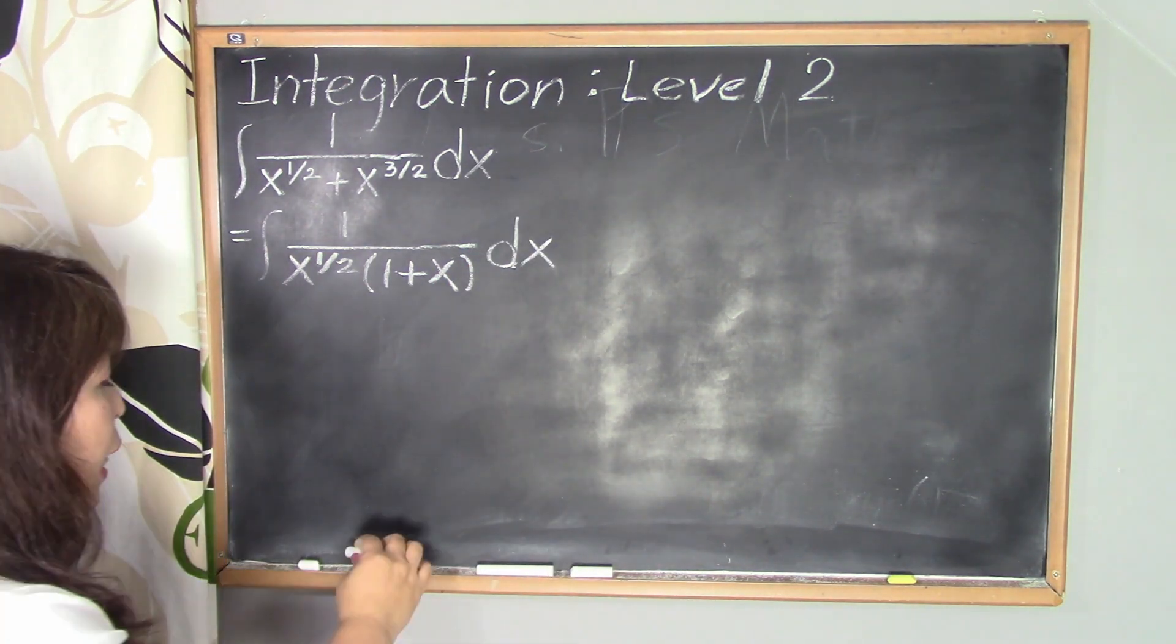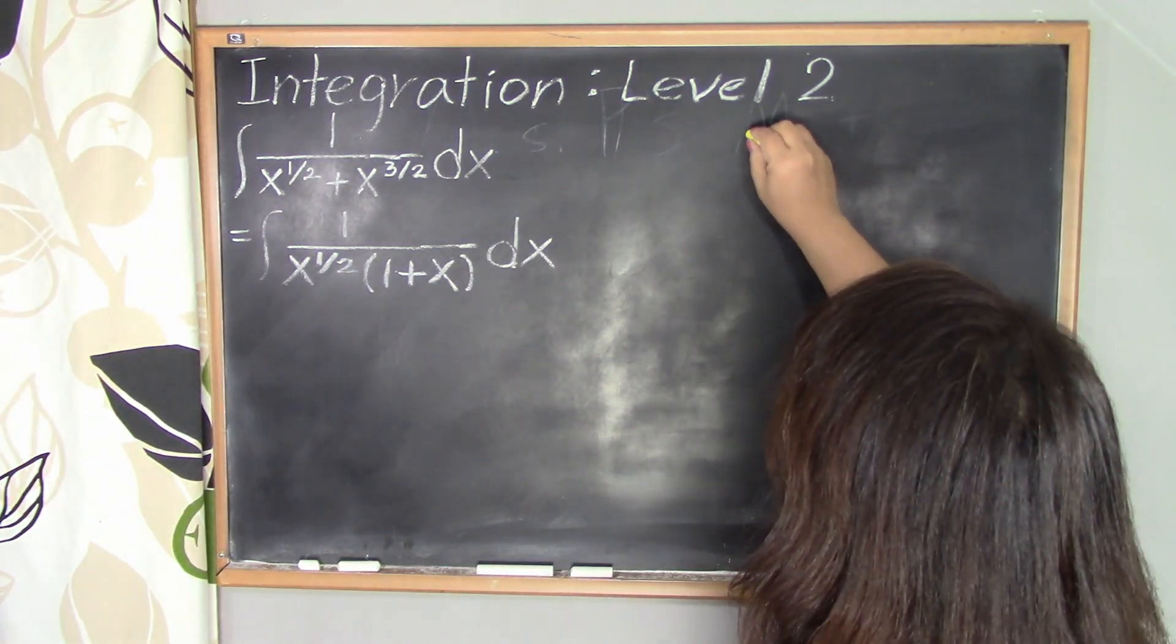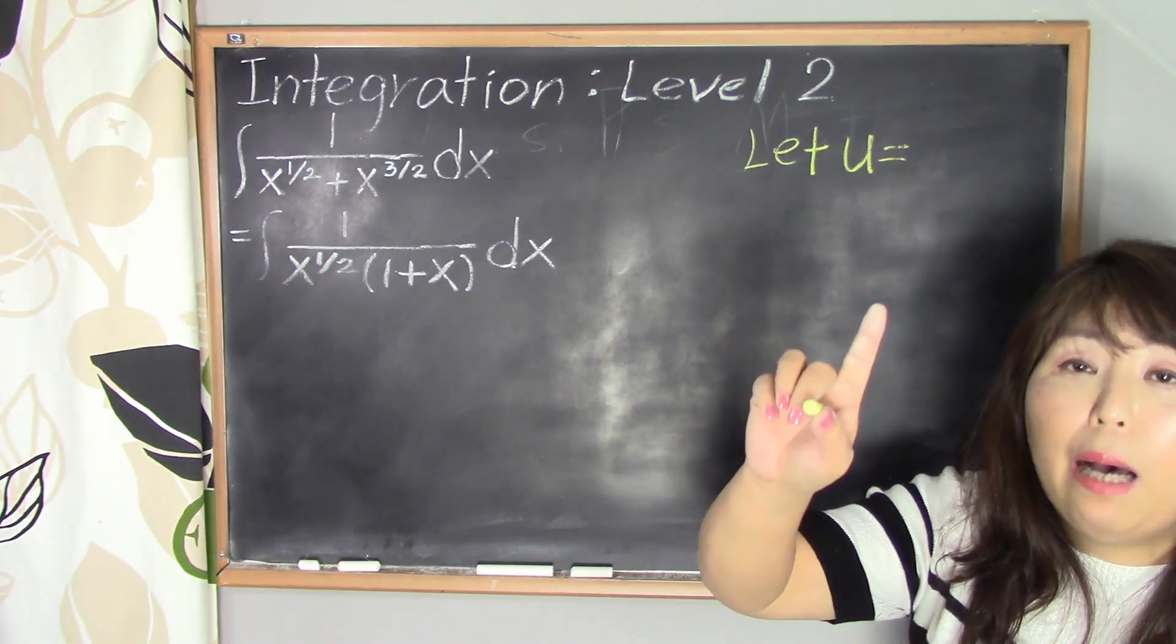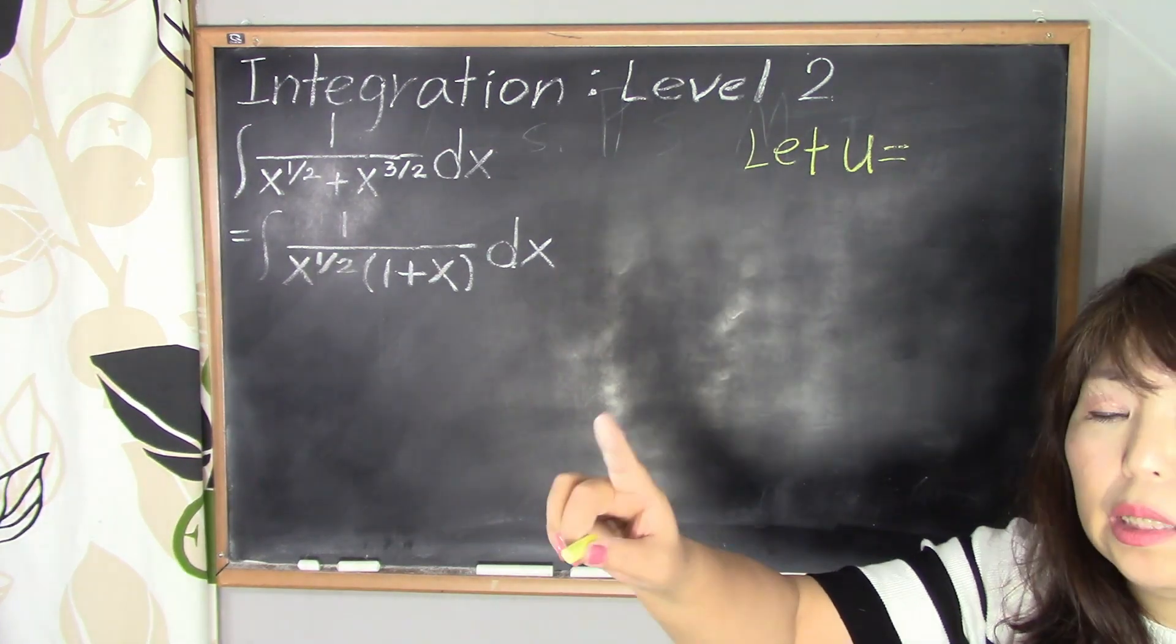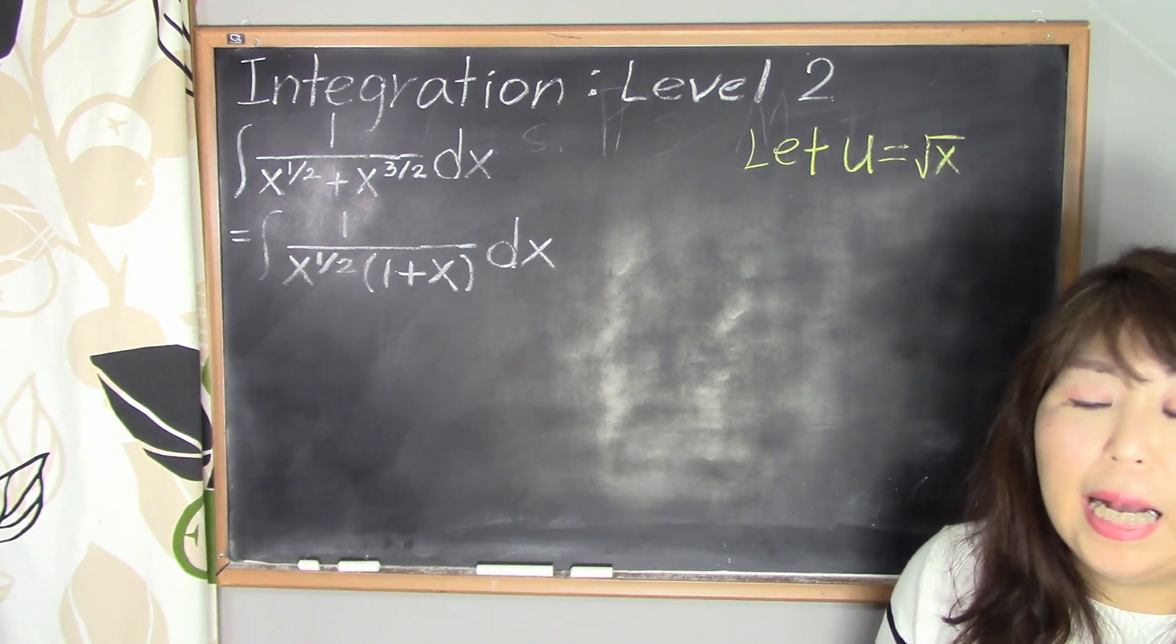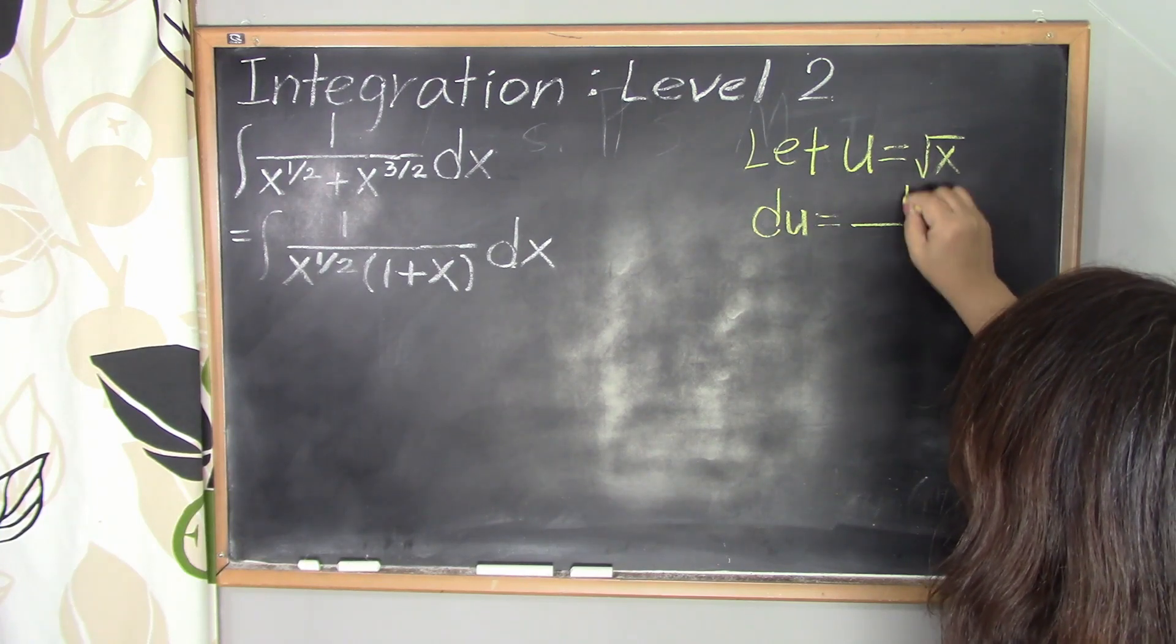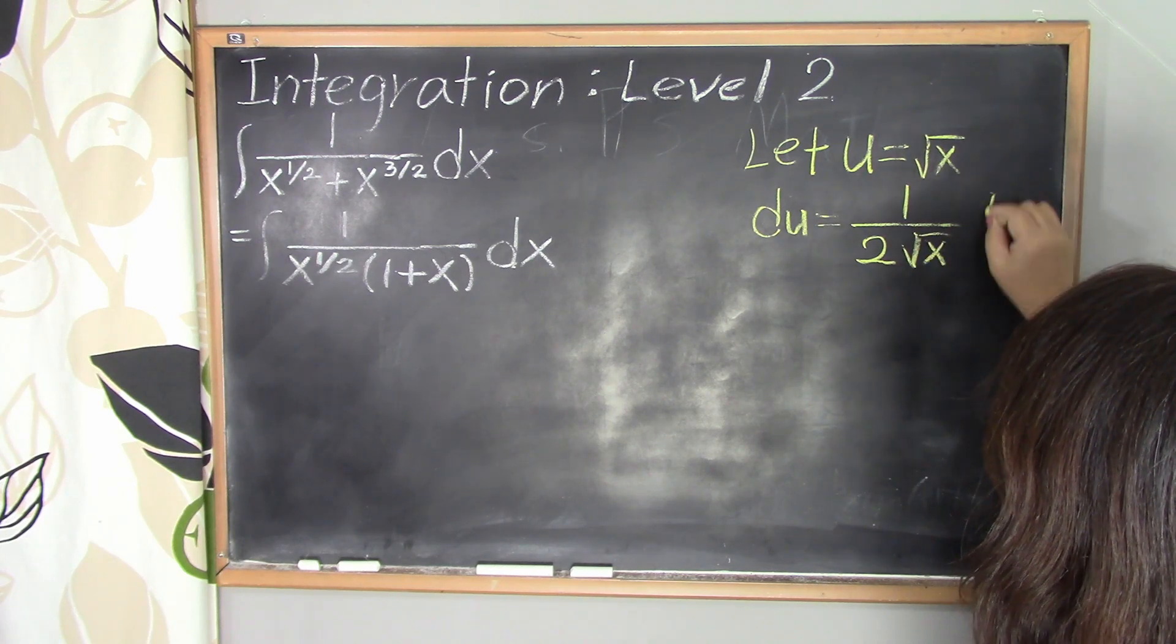And next step, we're going to use u substitution. So let u equal x to the 1/2. However, I'm going to change x to the 1/2 to square root of x, because that's going to be easier to calculate. And then next step, we're going to differentiate this equation. That is du equals 1 over 2 times square root of x dx.